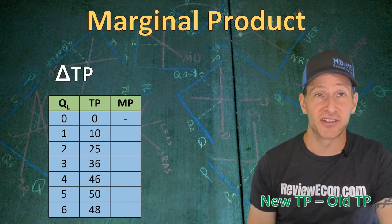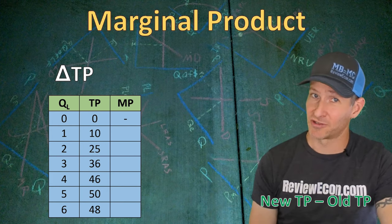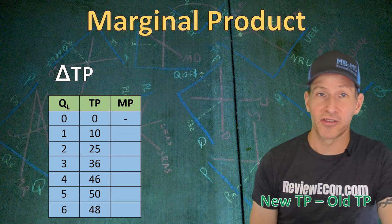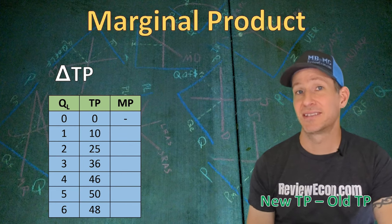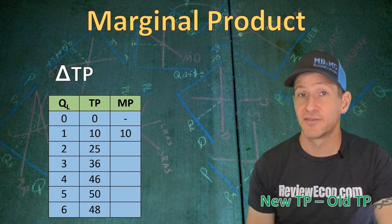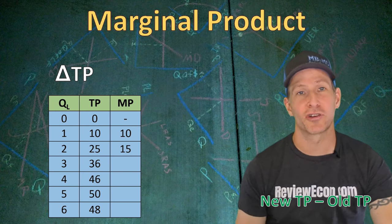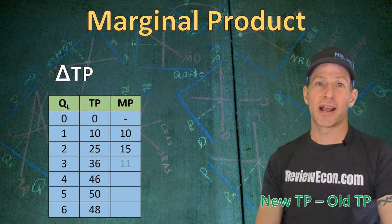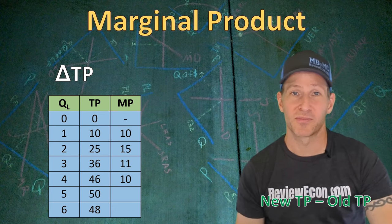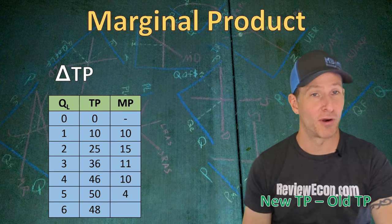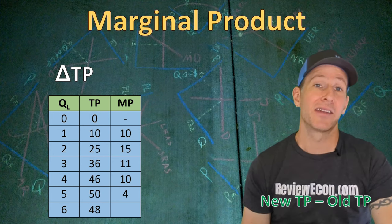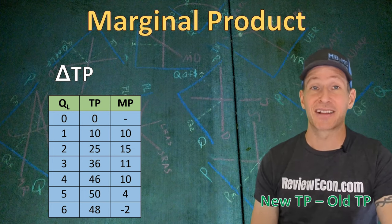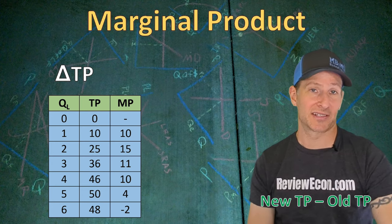The formula for marginal product is the new total product from hiring the additional worker minus the old total product. Hiring the first worker, total product goes from zero to 10 — a marginal product of 10. Hiring the second worker increases total product by 15, so marginal product is 15. The third worker has a marginal product of 11, the fourth has 10, the fifth has 4. The sixth worker has a marginal product of negative two because the total product actually decreases by two units from hiring that sixth worker.